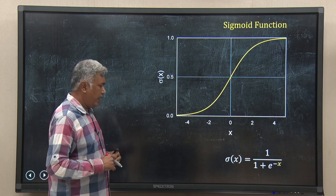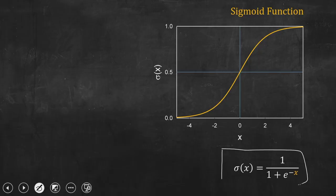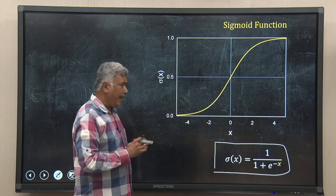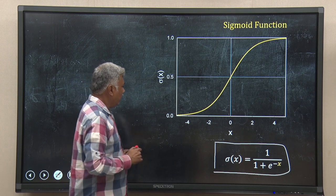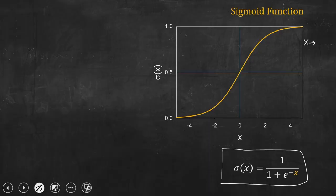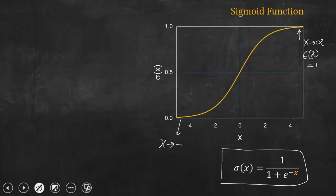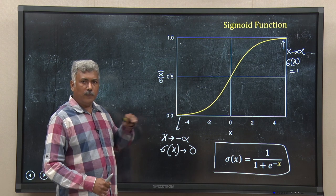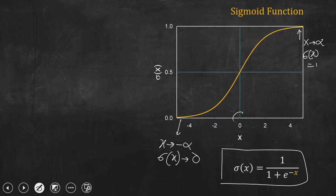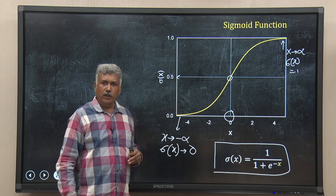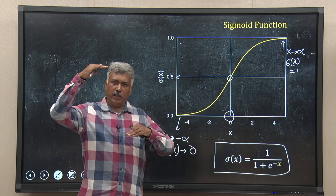The sigmoid function used for logistic regression has the form: σ(x) = 1 / (1 + e^(−x)). When x tends to infinity, σ(x) becomes 1 — it saturates at 1. When x tends to minus infinity, the function becomes close to 0 — bounded at 0 on the lower side. It is centered at 0, where its value is 0.5. So we have solved the problem: the function is bounded between 0 and 1.